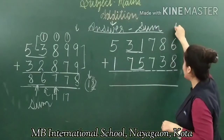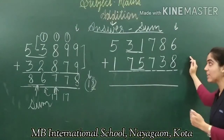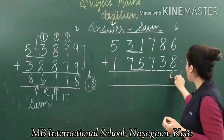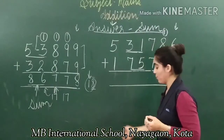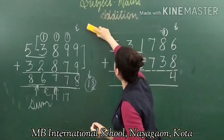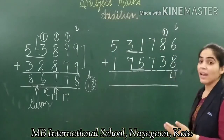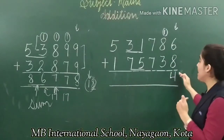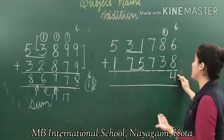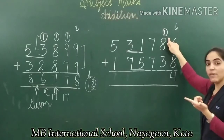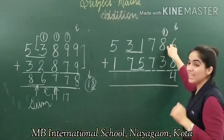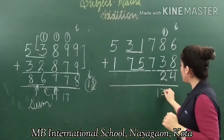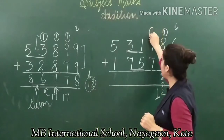Start adding from the back, from the right side, then move forward to the left. Six plus eight is fourteen: four goes below and one is carried. Whenever we add and get a two-digit number and we have more addends, we write the last digit and carry the forward digit. Eight plus one is nine, nine plus three is twelve: two goes below and one is carried forward.